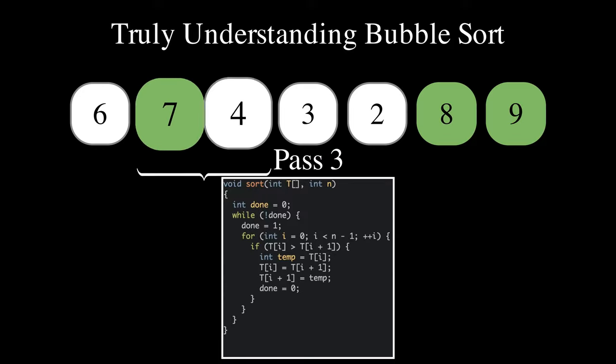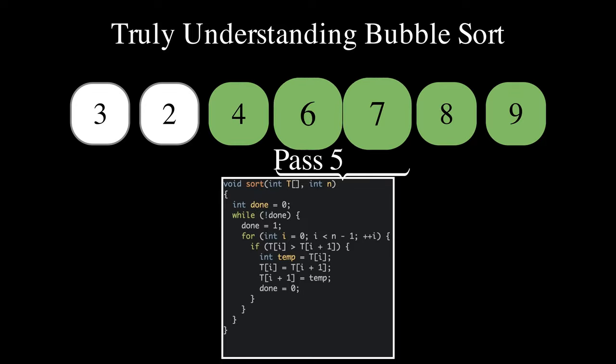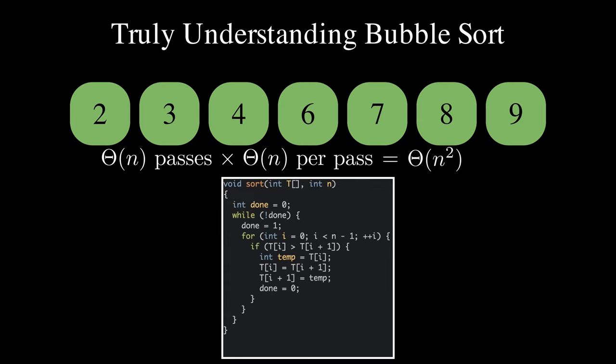Bring 7, 6, 4, and 3 to their final positions in this order. As there are theta of n passes and each pass takes theta of n time, the running time overall is theta of n squared.